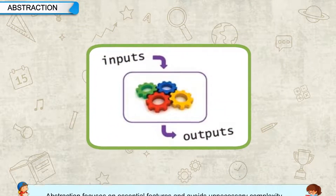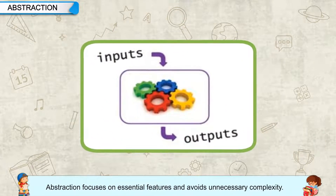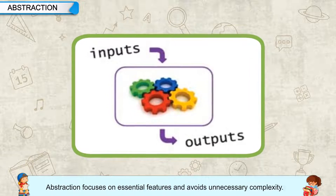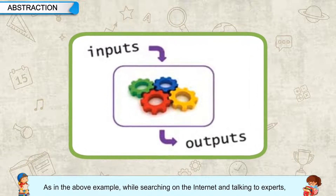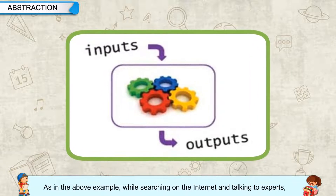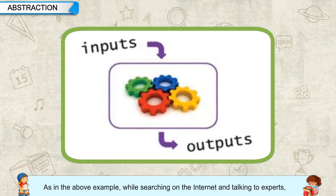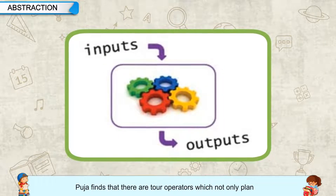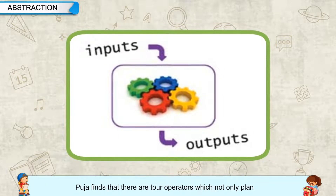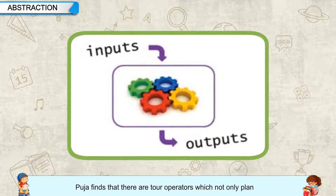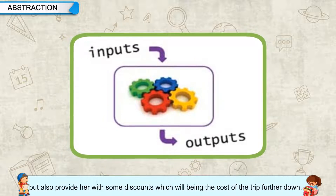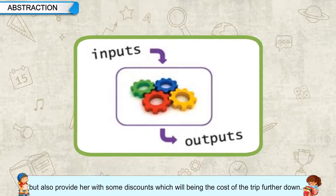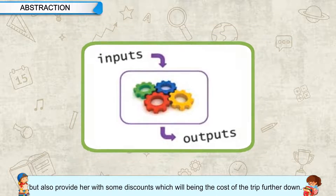Abstraction focuses on essential features and avoids unnecessary complexity. In the above example, while searching on the internet and talking to experts, Pooja finds that there are tour operators which not only plan the trip but also provide discounts, which will bring the cost of the trip further down.